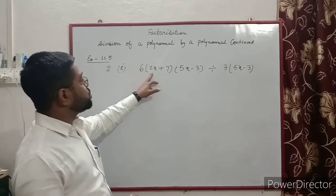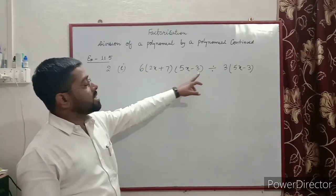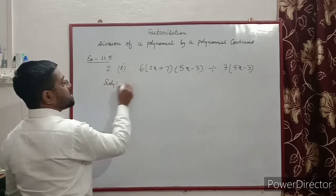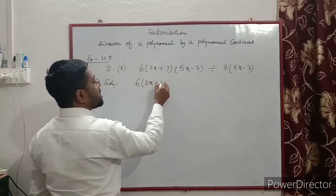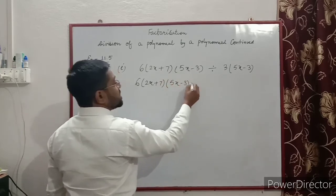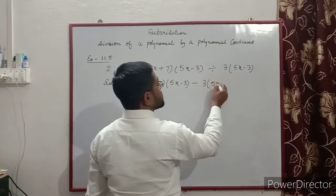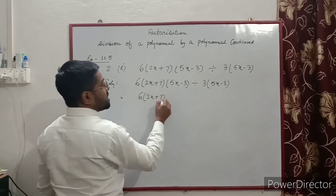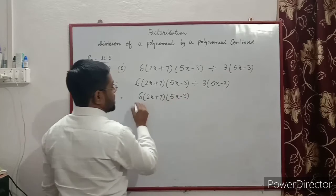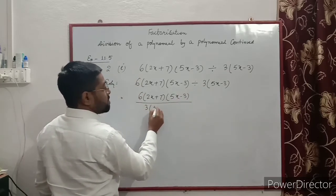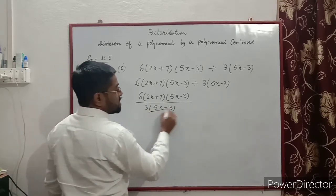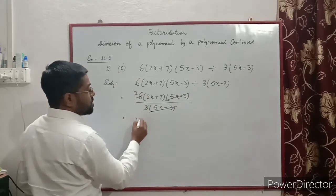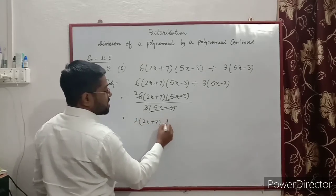Question number 2: Divide 6·(2x + 7)·(5x − 3) by 3·(5x − 3). Solution: we write 6·(2x + 7)·(5x − 3) divided by 3·(5x − 3). Now (5x − 3) cancels out. Then 6 divided by 3 gives 2. So we have 2·(2x + 7) — that is the answer.